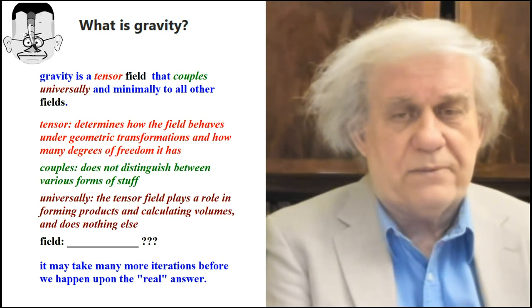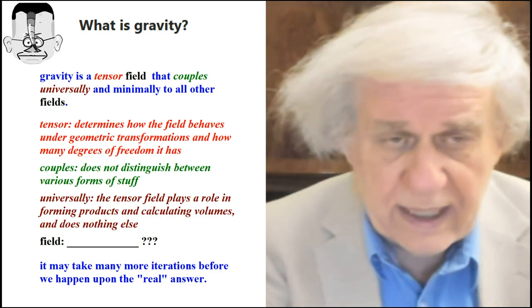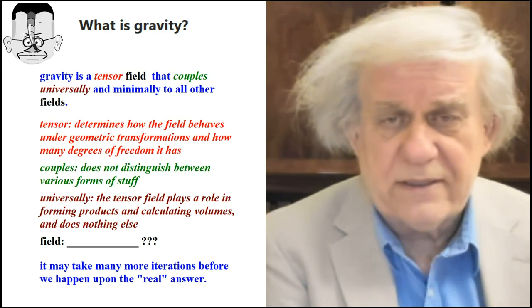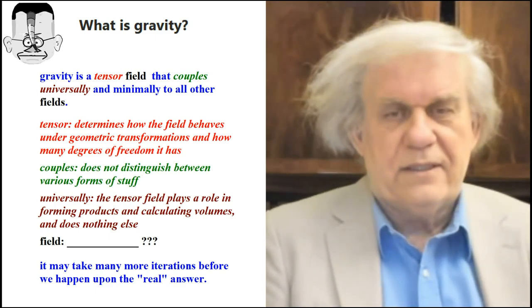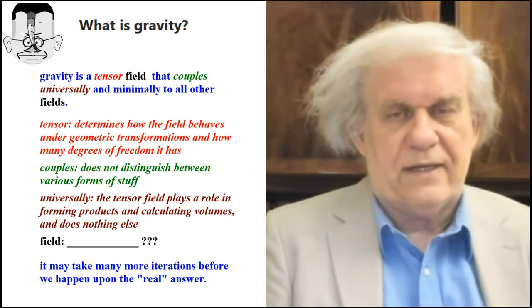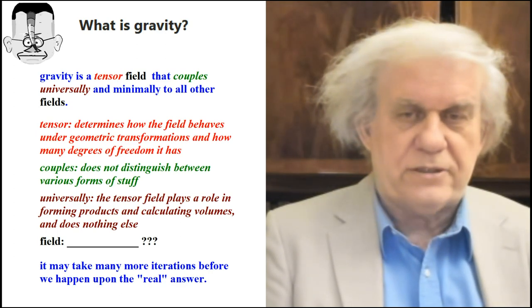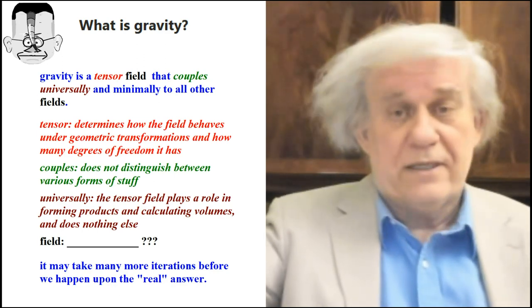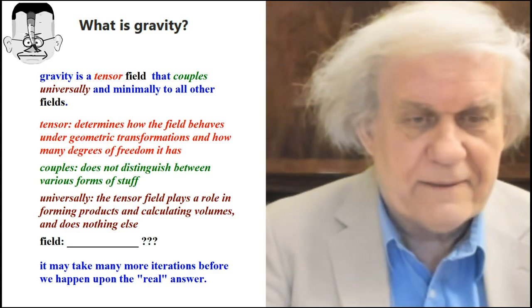Here he continues. He says, what is gravity? Gravity is a tensor field that couples universally and minimally to all other fields. He clarifies that a tensor determines how a field behaves. Couples means does not distinguish between various forms of stuff. Universally means the tensor field plays a role in forming products and calculating volumes. He didn't define the word field, which is the one we were waiting for. When you look up the word field, it's just a bunch of numbers.